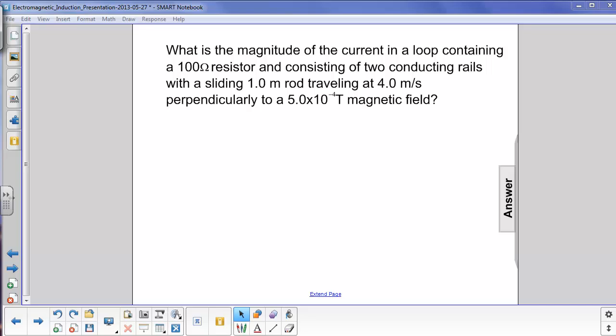What is the magnitude of the current in a loop containing a 100 ohm resistor and consisting of two conducting rails with a sliding 1.0 meter rod traveling at 4.0 meters per second perpendicularly to a 5.0 times 10 to the minus 4th Tesla magnetic field? So let's draw what we have here.